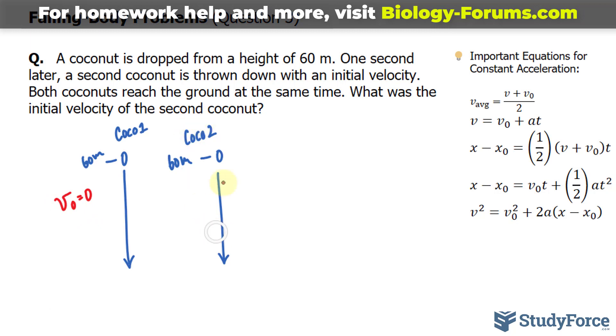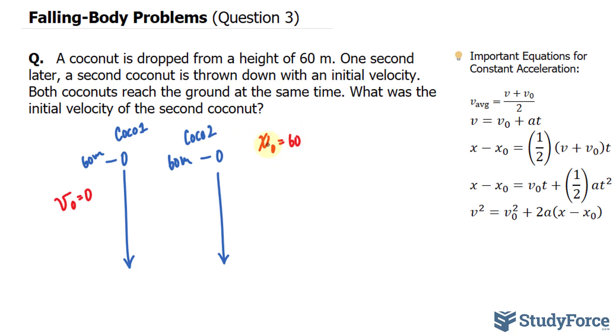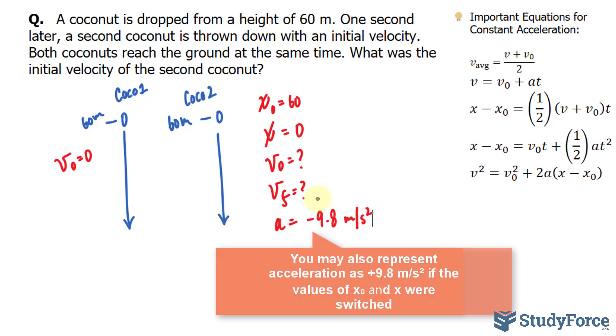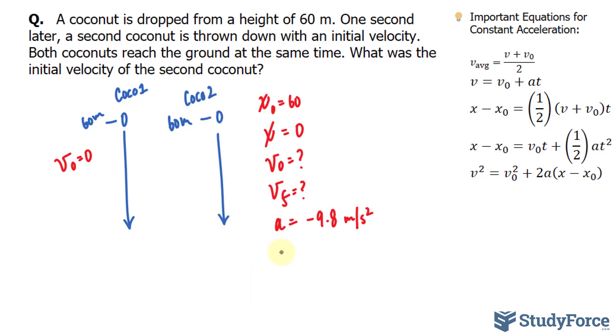Let's write down everything we know. So for coconut two, it starts at 60 and we'll represent that with x sub zero. It ends at zero. We don't know its initial velocity. We don't know its final velocity. We do know that there is an acceleration due to gravity, and I'll represent that as a equals negative 9.8 meters per second squared. The reason why I chose negative is because I'm taking into account the direction of this coconut going downwards. And the time that it takes for coconut one and coconut two to reach the ground is unknown, but they are the same.